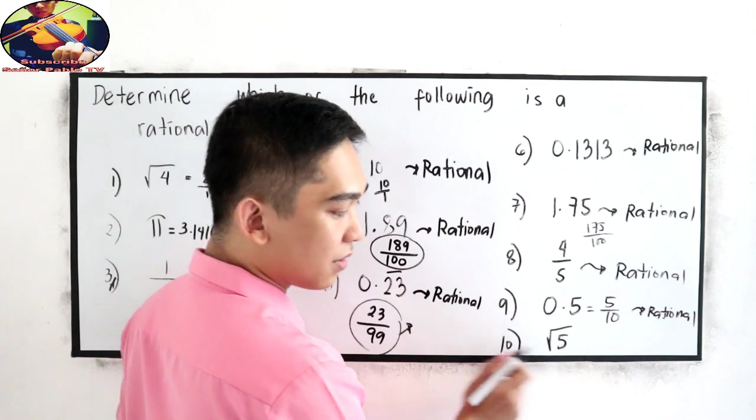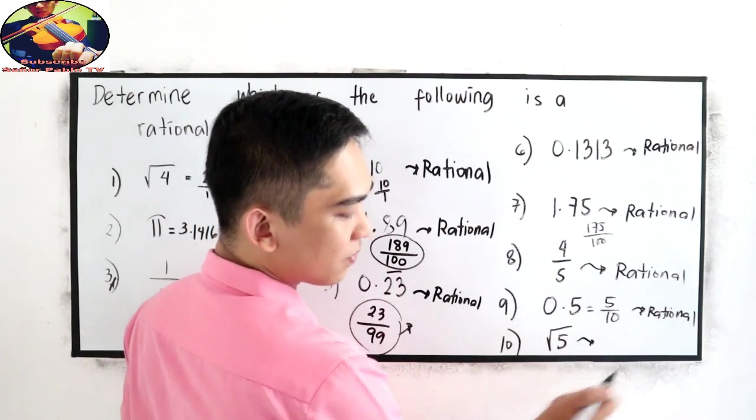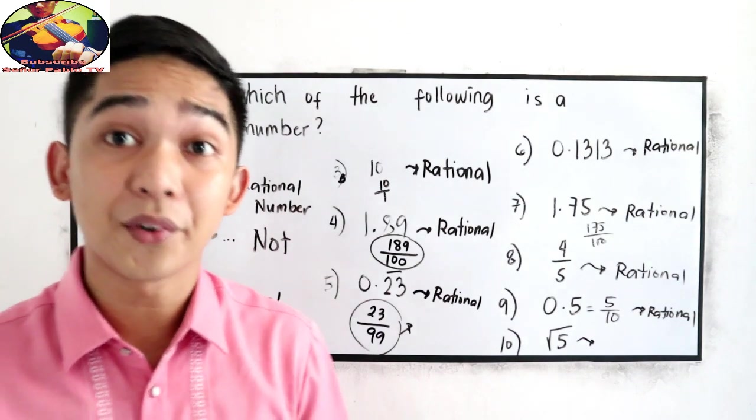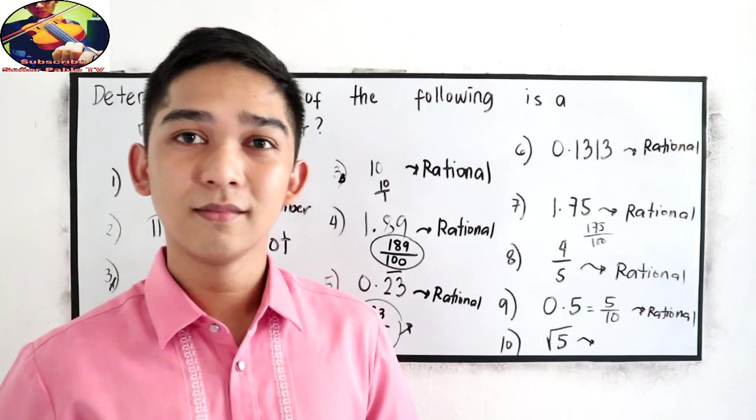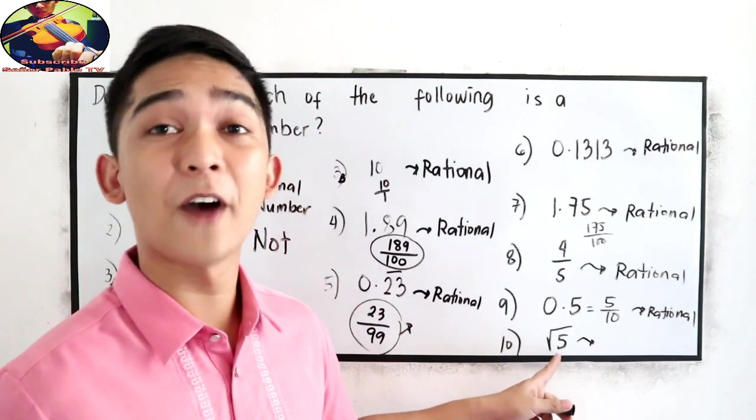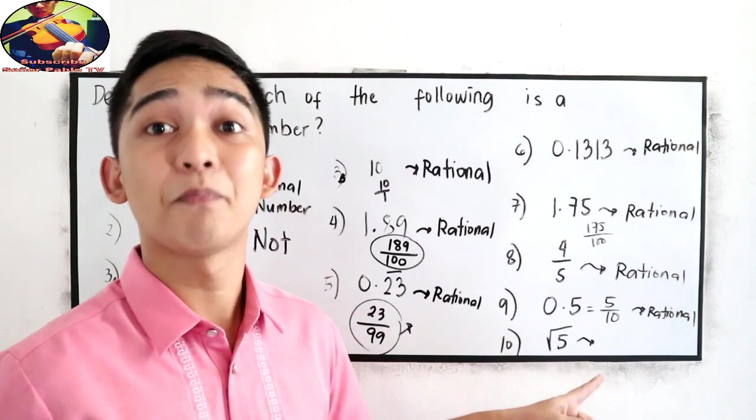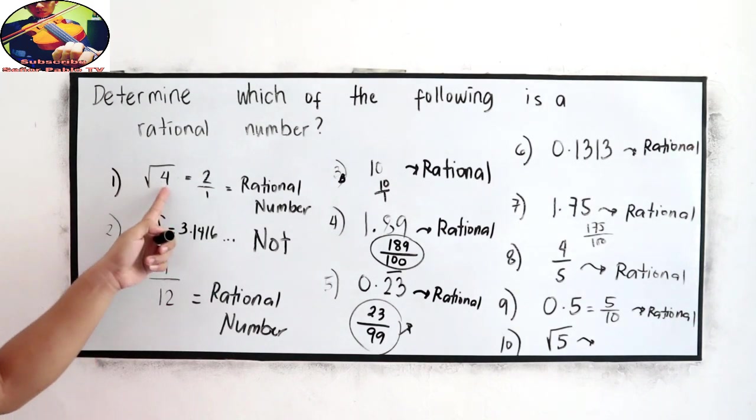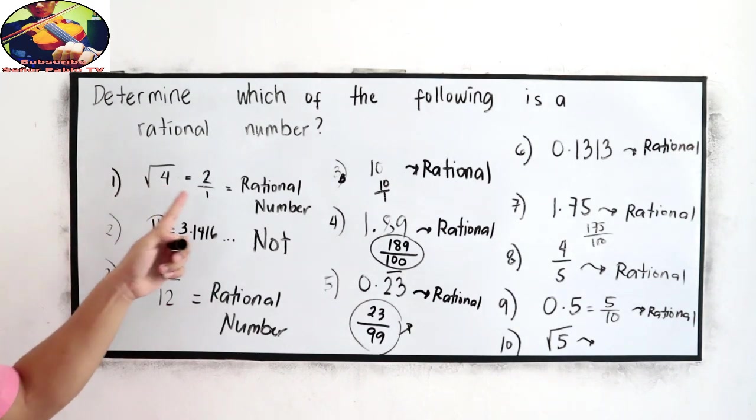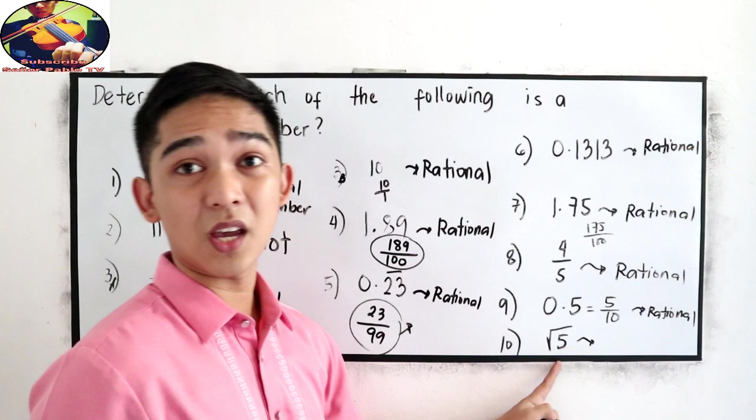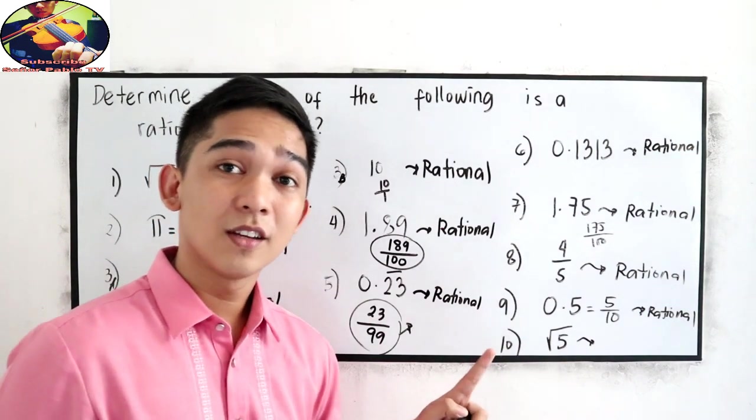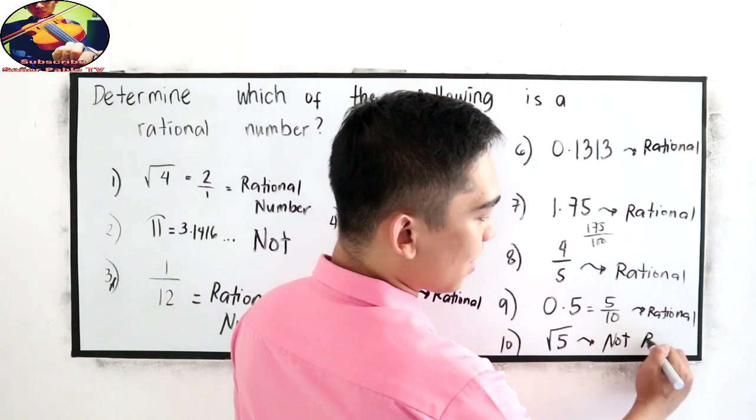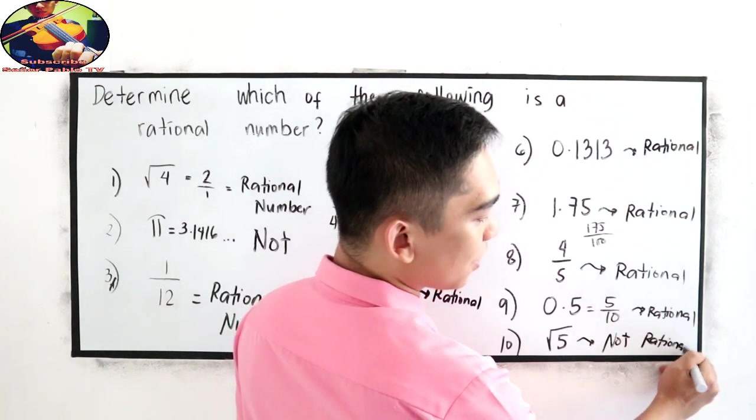And number 10, square root of 5, square root of 5 is an irrational number. Because 5 is not a perfect number. Unlike in number 1, 4 is a perfect number, square root of 4 is 2. Well, in this case, we cannot write it into a rational number. So, this is not a rational number.